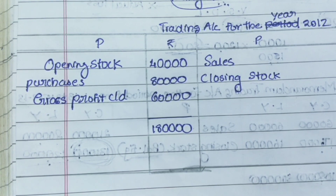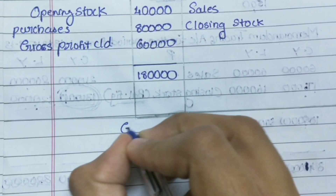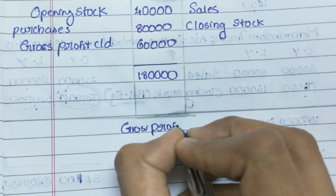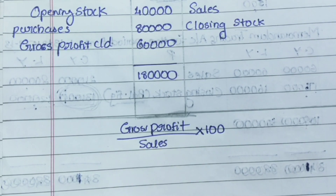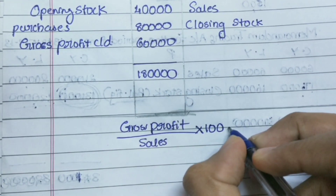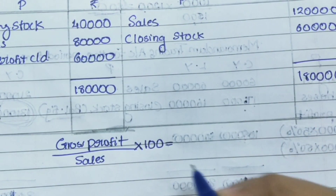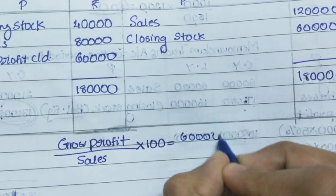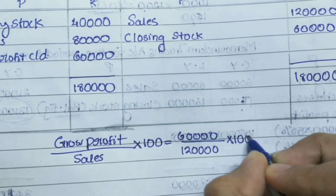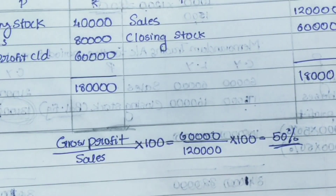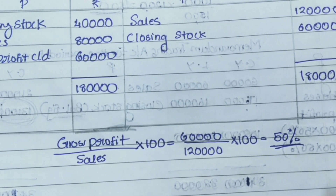Now we need to find the gross profit ratio. Gross profit ratio equals gross profit divided by sales multiplied by 100. Gross profit is 60,000, sales is 1,20,000, so 60,000 ÷ 1,20,000 × 100 = 50%. We will apply this 50% gross profit ratio in the memorandum trading account.